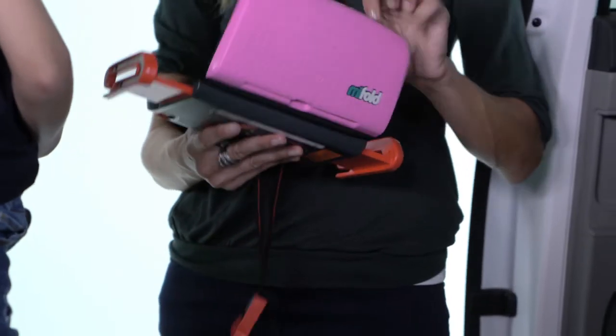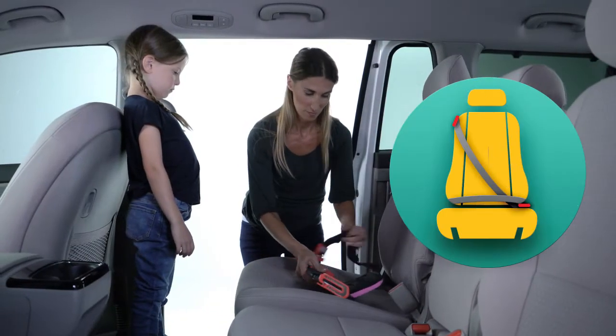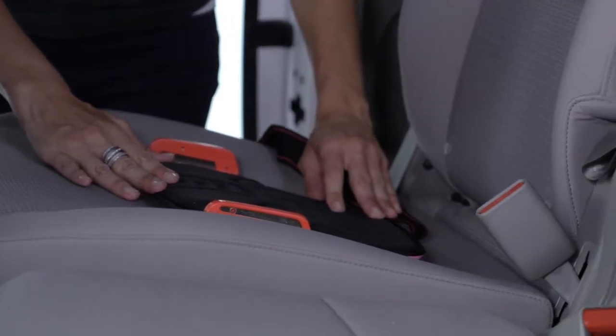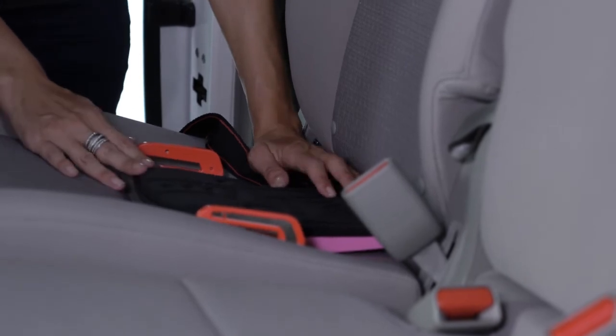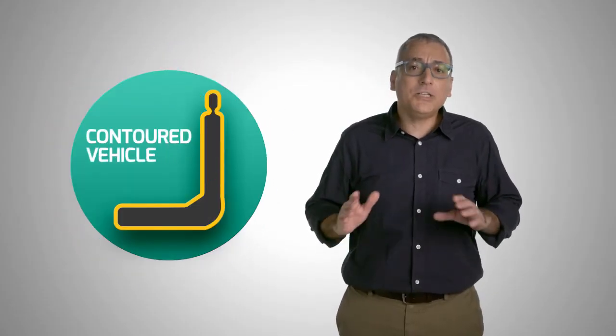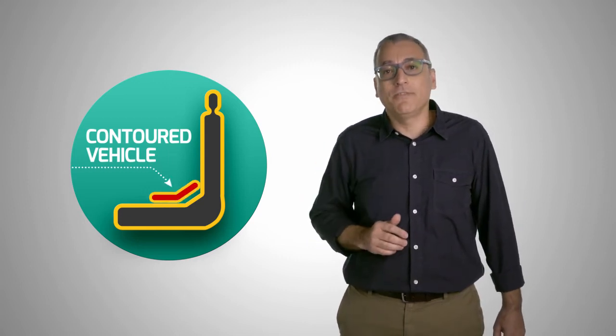Now you're ready to use MyFold. Unfold and place the booster seat on a vehicle seat in a seating location that has a vehicle lap and shoulder belt. Slide the booster seat back on the vehicle cushion so the back of the booster is in contact with the vehicle seat back cushion. For contoured vehicle seats, position the back of the booster seat on the contour and in contact with the vehicle seat back.